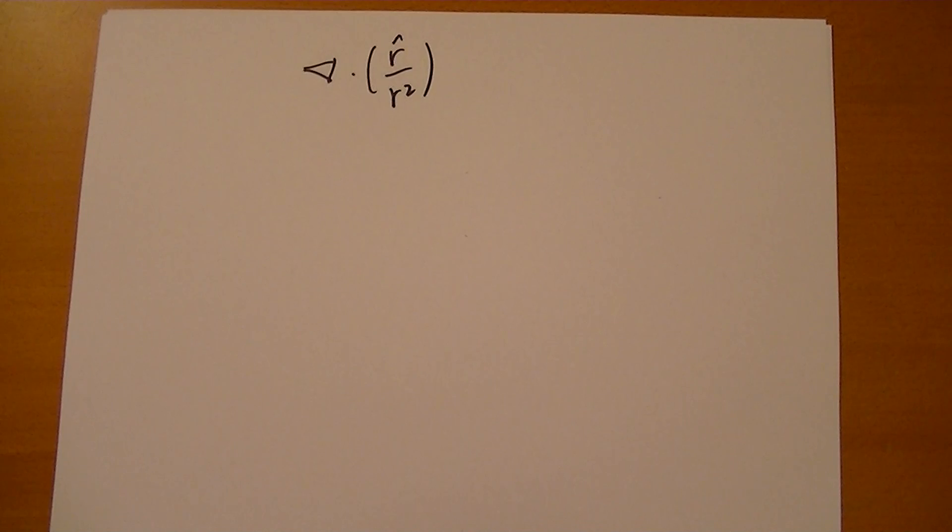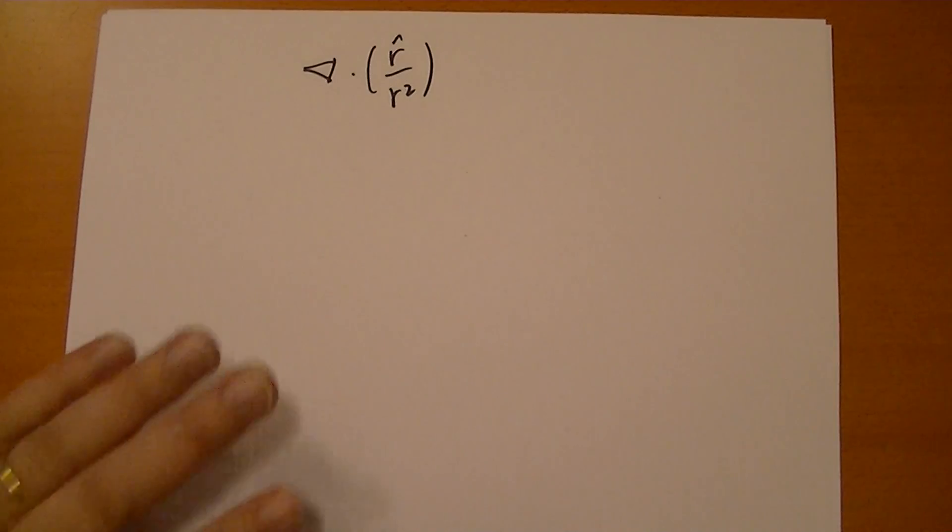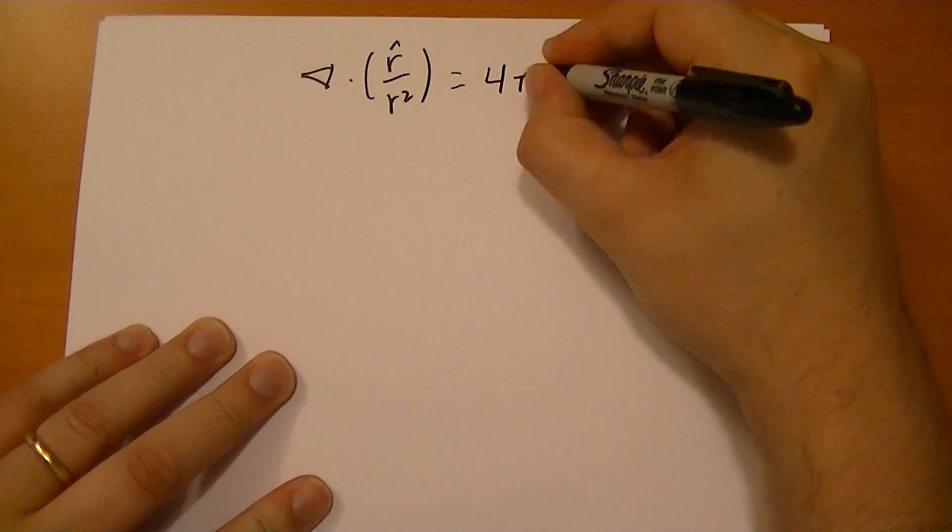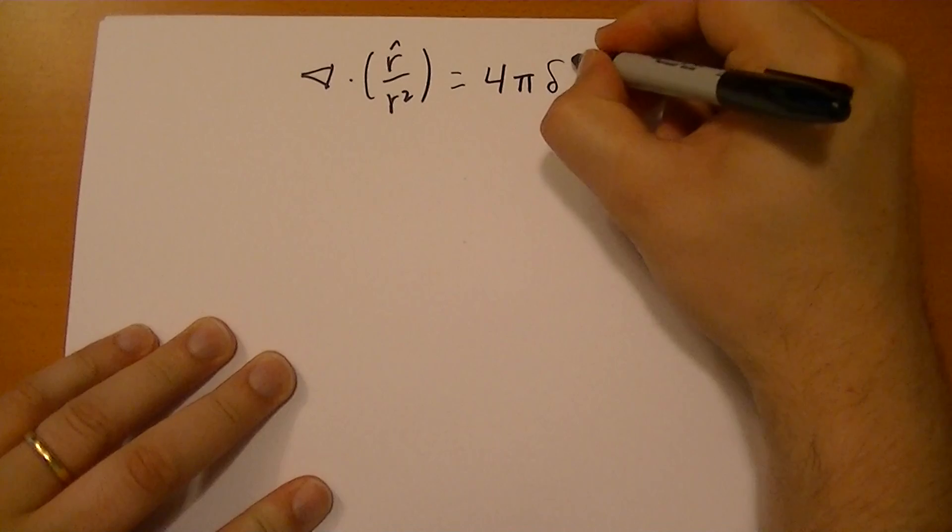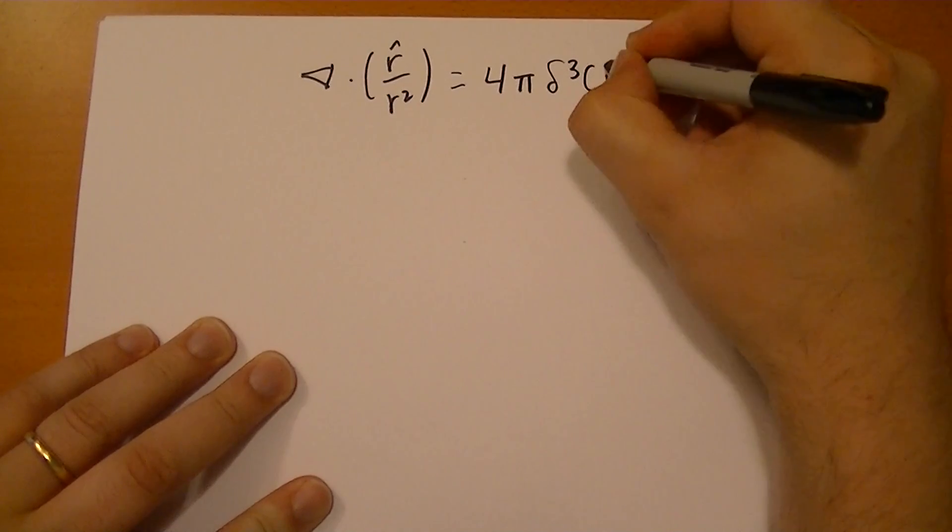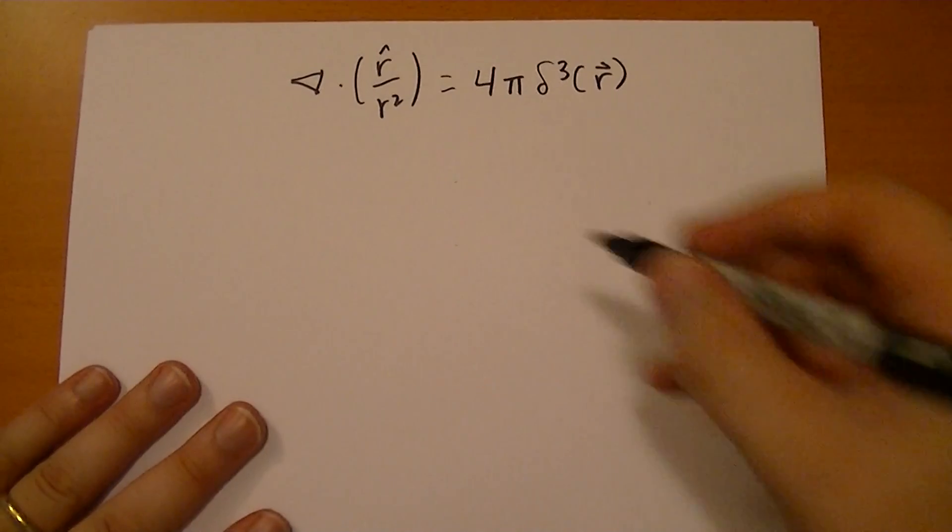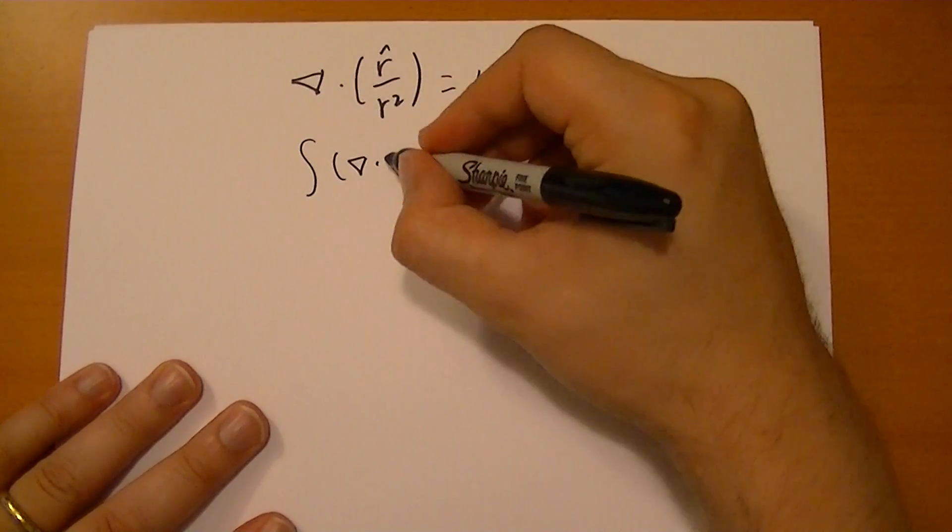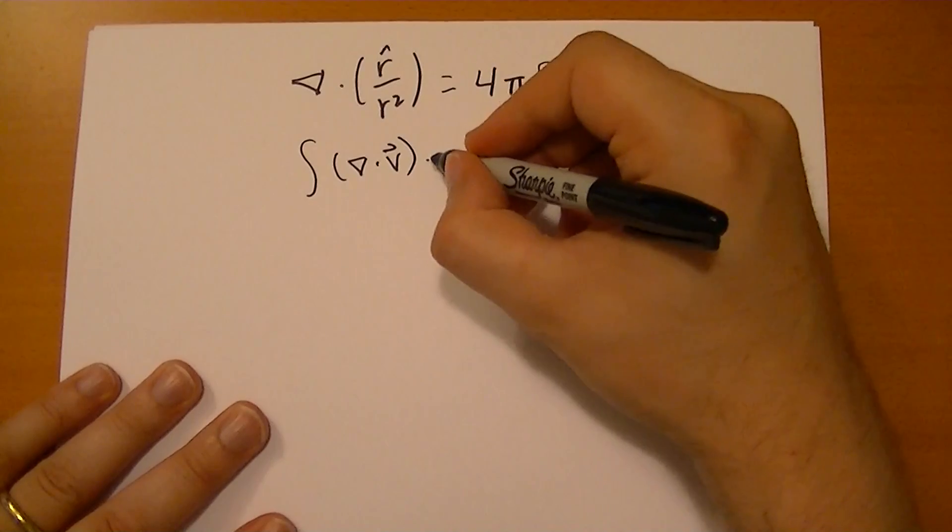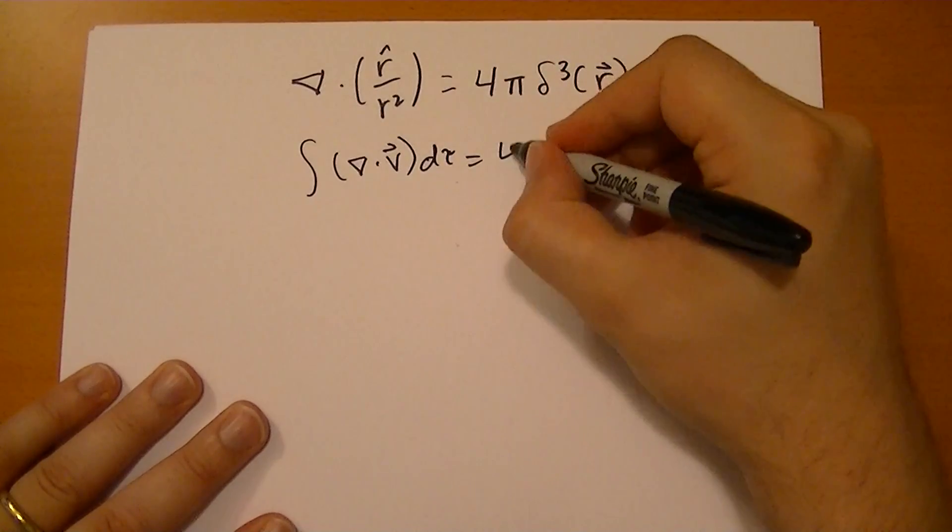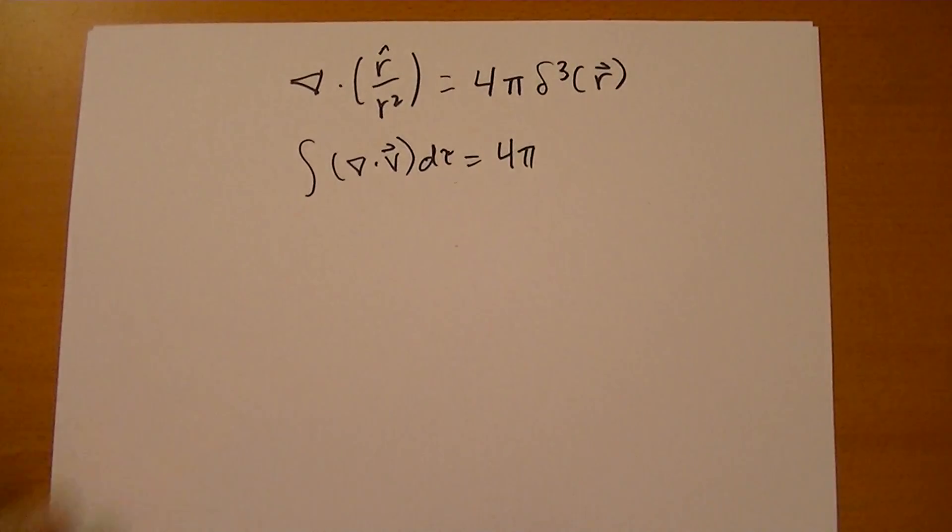And yet the integral of this thing was equal to 4π. Because we know that the flux through the surface was 4π. So we're left to conclude that this is the actual formula for what the divergence of that was. And so now when we take the integral of the divergence of that vector field dτ, now we get 4π, which is in agreement with what the flux was.